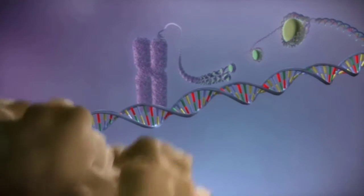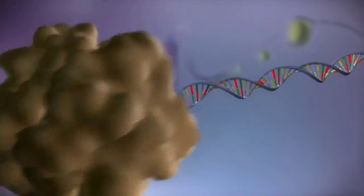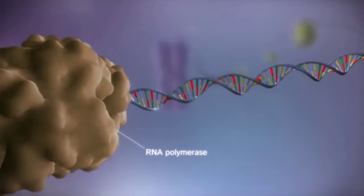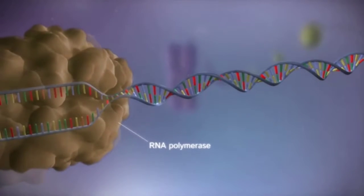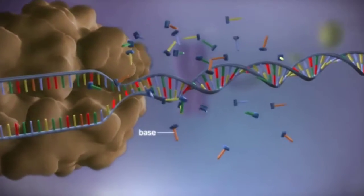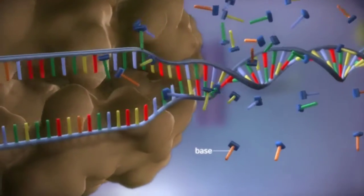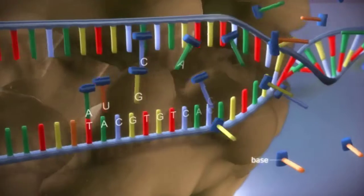When a gene is switched on, an enzyme called RNA polymerase attaches to the start of the gene. It moves along the DNA, making a strand of messenger RNA out of free bases in the nucleus.